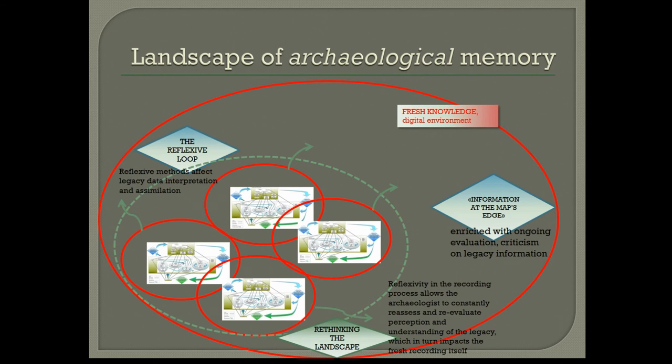Rather, we should consider a model of knowledge production in which the small red circles multiply, are all interconnected, and each one is connected with the larger circle. Therefore, the dashed line including the legacy as a word package should not exist in the reflexive loop, otherwise data would be biased and knowledge reduced.